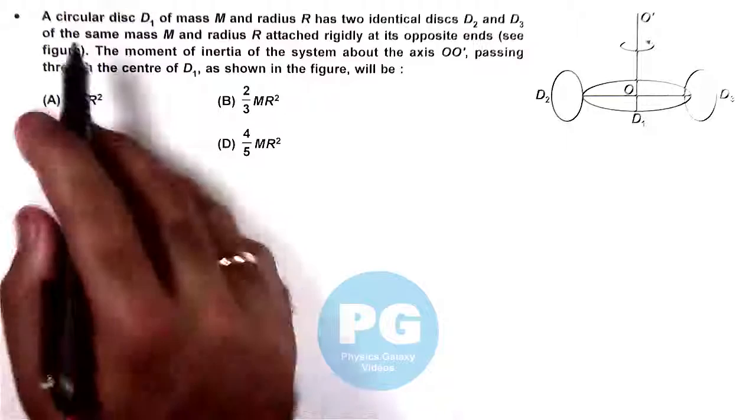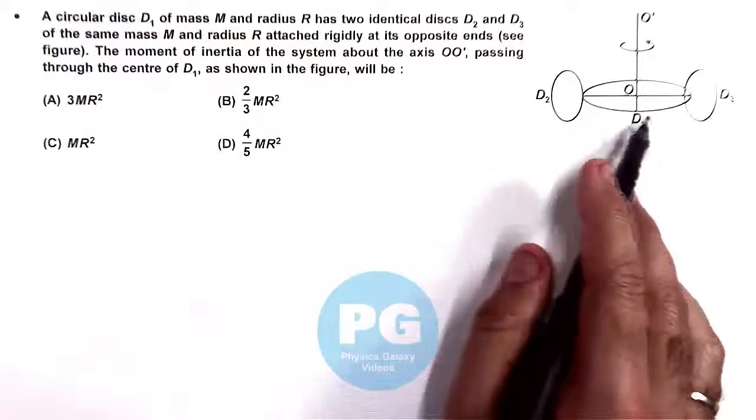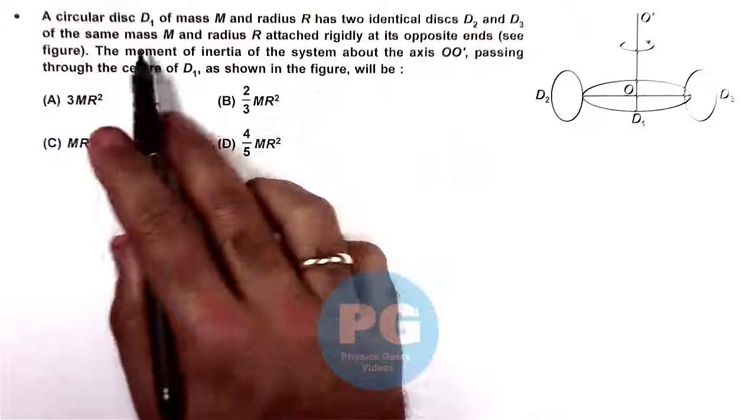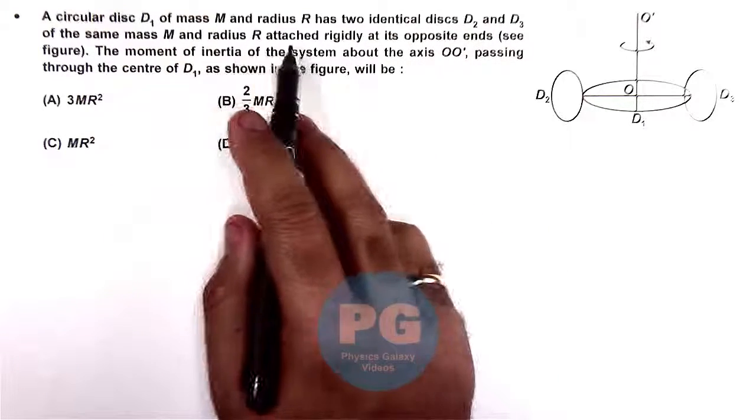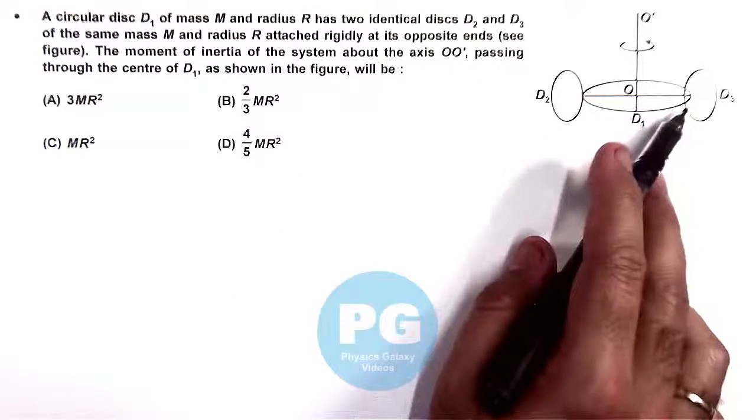In this question it says, the circular disk D1 of mass M and radius R, this is D1, has two identical disks D2 and D3 of same mass M and radius R attached rigidly at its opposite ends across a diameter as we can see in the figure.